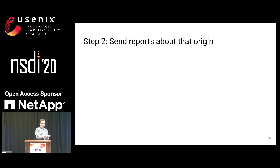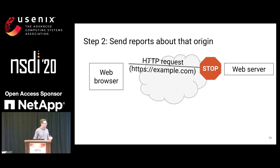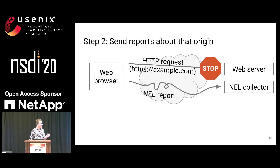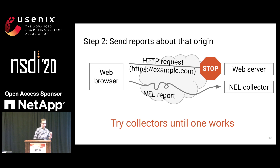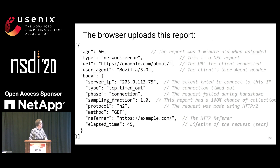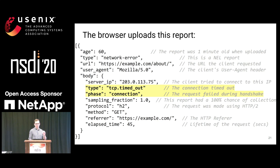After the user has successfully made a request and turned on NEL, a later request might not work. At that point, the browser generates a report and sends it off. It goes through that list of collectors — you can specify multiple with different failure domains — and it keeps trying them until it finds one that works. Eventually, after about 15 minutes, if none are working, it just drops the data. The report is a JSON-formatted version of a web request log, with a bit of extra information: a general category of reason why the request didn't work — for instance, the connection timed out, or the DNS resolution didn't work.